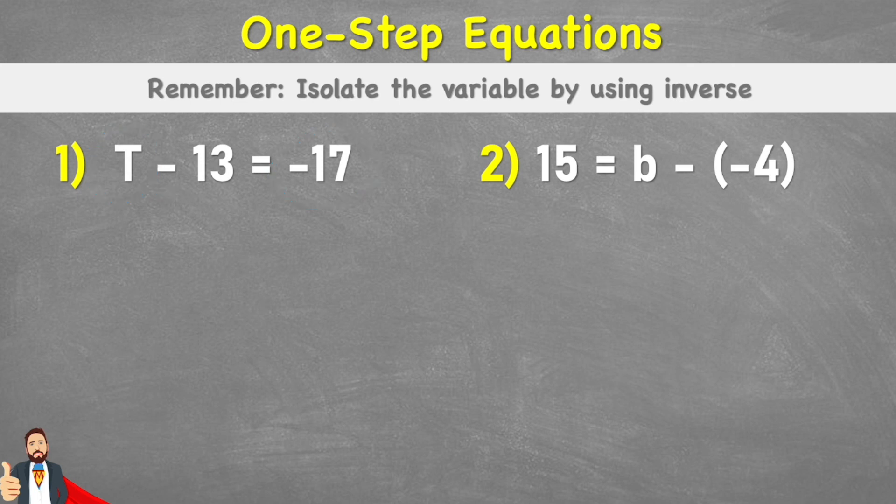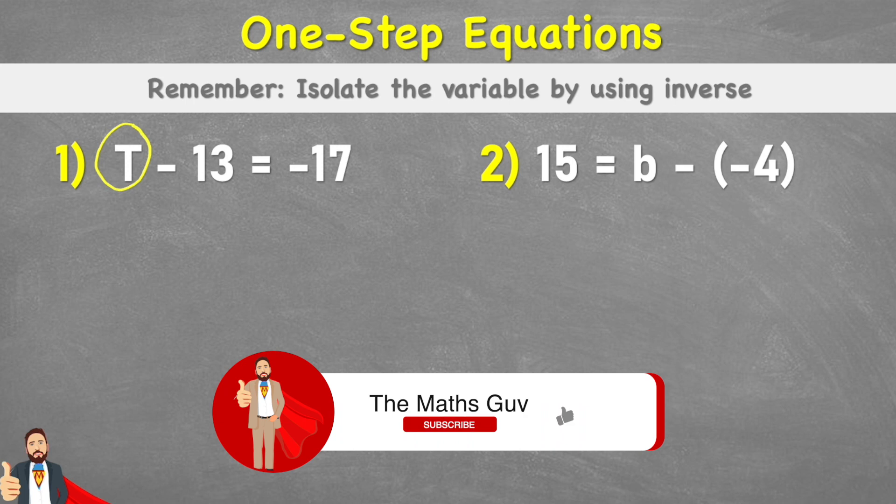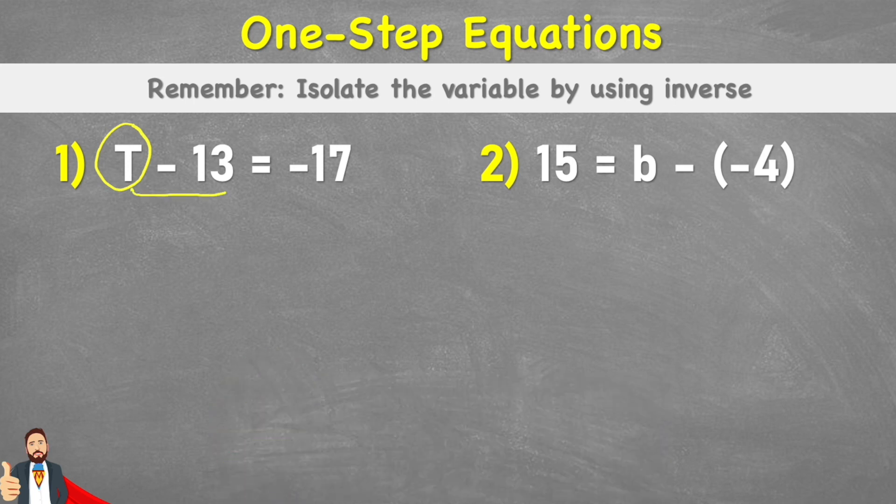So what are we trying to do when we're trying to solve a one-step equation? Well, we want to get this variable on its own to understand the value of it. At the moment, this variable is connected to this subtract 13, so we need to find a way to get it on its own. Well, what we're going to remember today is that we need to isolate the variable by using the inverse.